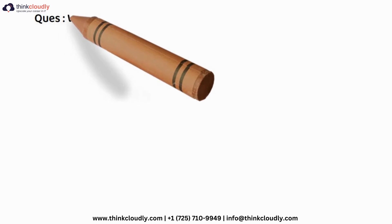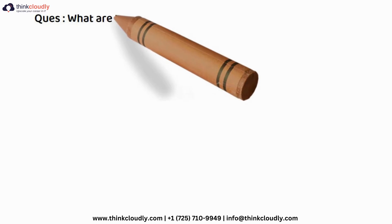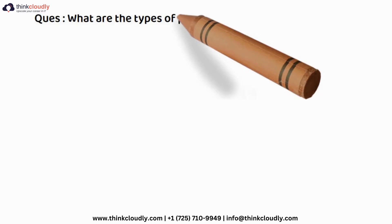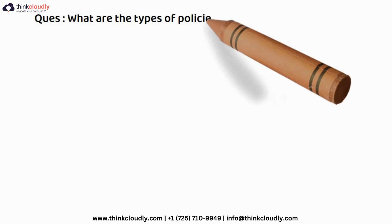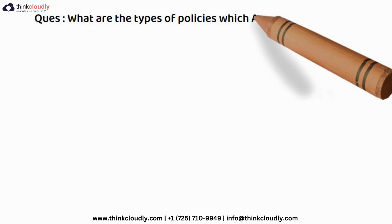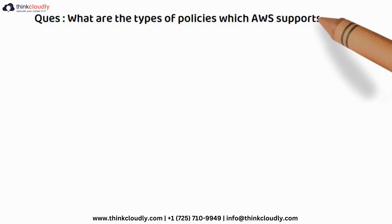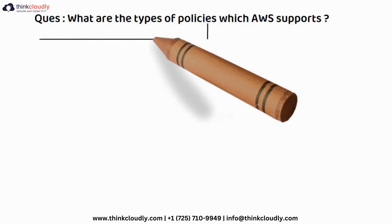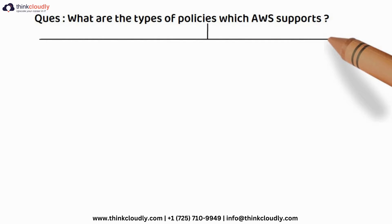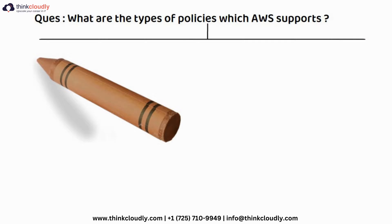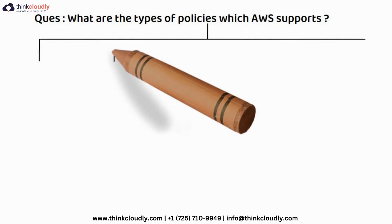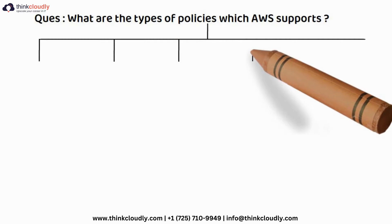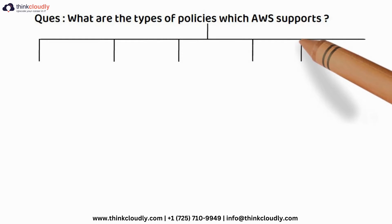The question for today is: what are the types of policies which AWS supports? There are only six types of policies which AWS supports. First of all, what is a policy? A policy is a set of permissions which you provide to any entity — a user, a group, or a role — in order to grant them access to resources.